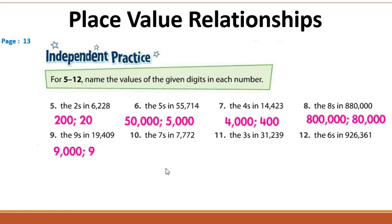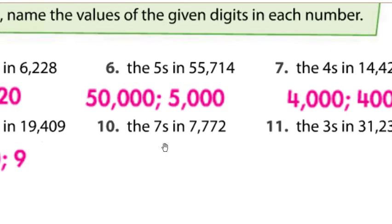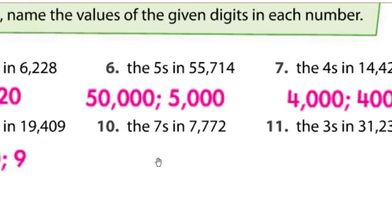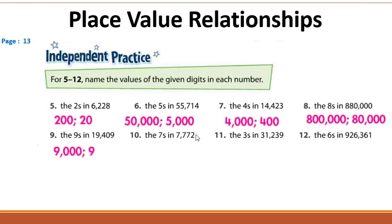For question ten, Nader answered. The number has three sevens. Taking them from the left: the first is seven thousand, the second is seven hundred, and the third is seven. Great, thank you.